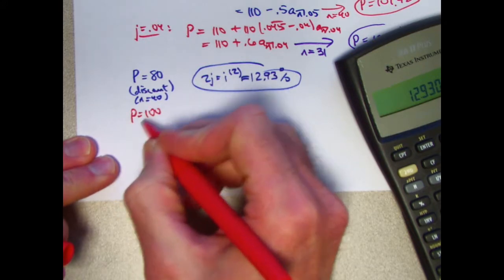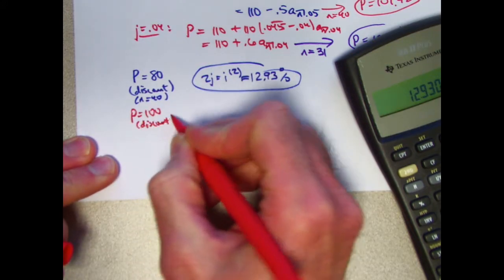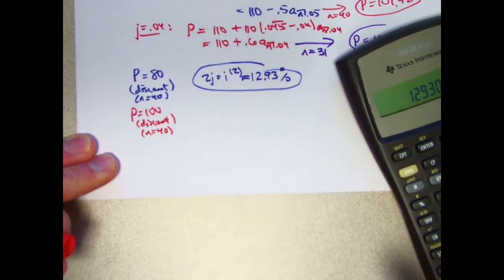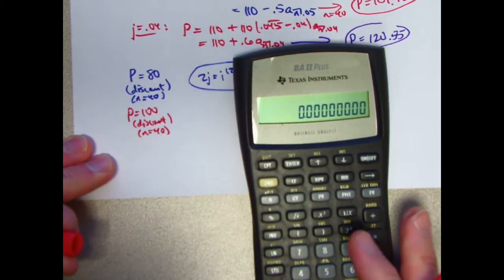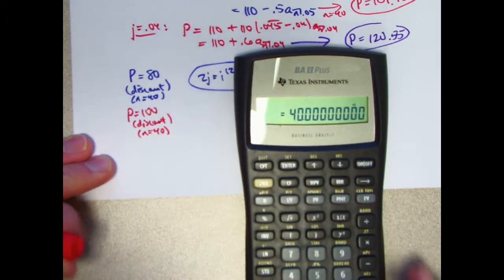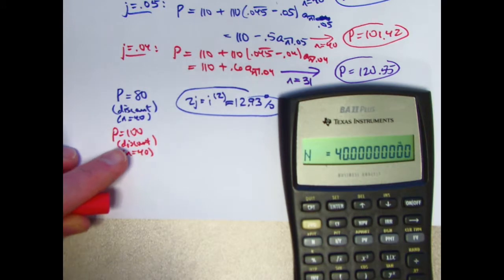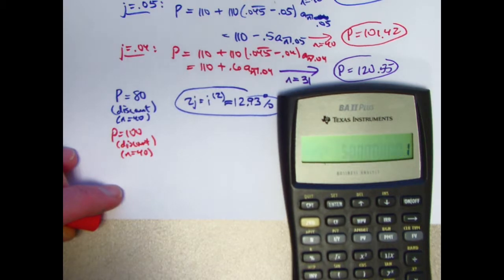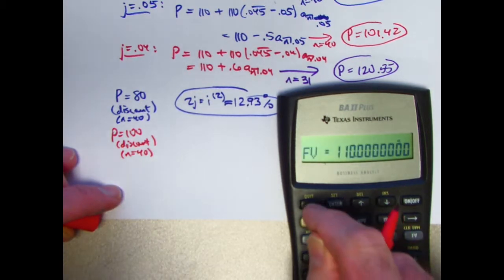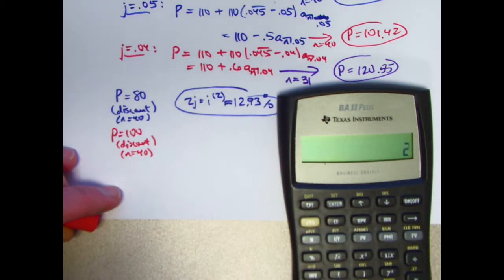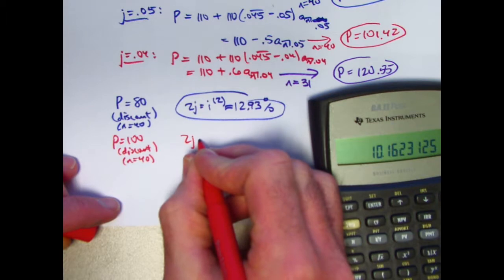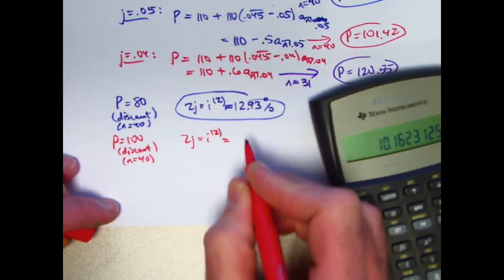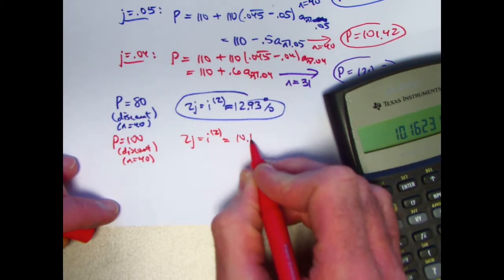The price is 100. That's still a discount from the redemption value, so we still use N equal to 40. Now the price is 100. Outgoing money. Make a negative sign. That goes into PV. That's the only thing that's different. The coupons are still 5. Goes into PMT. The redemption amount is still 110. Goes into FV. Compute I slash Y and double it. 2J or I2 is the nominal annual yield. That's about 10.16%.